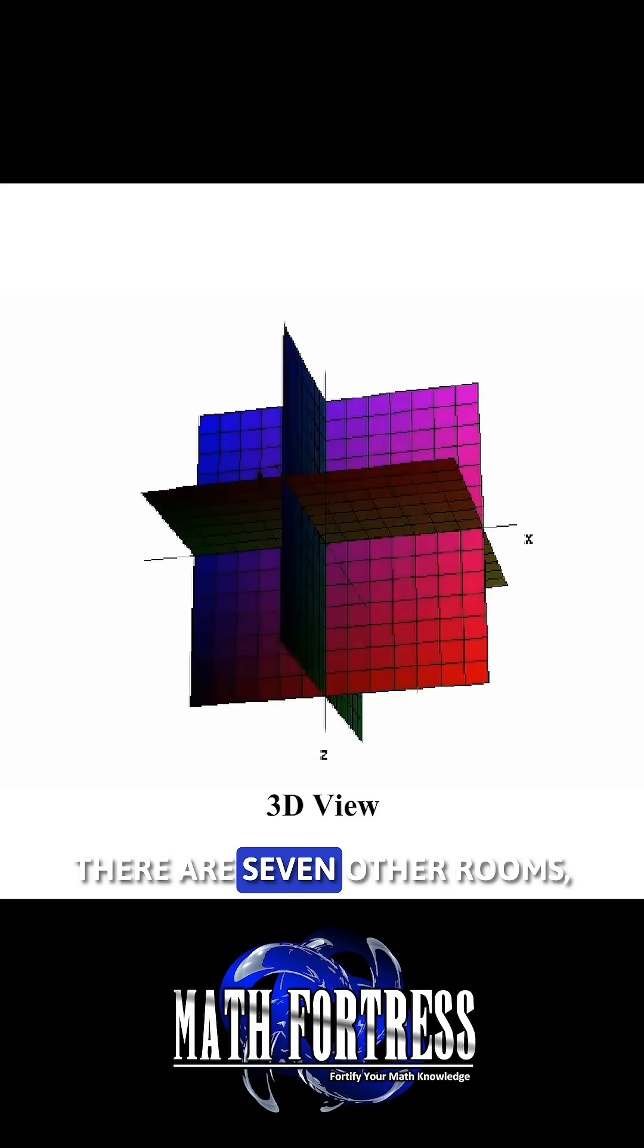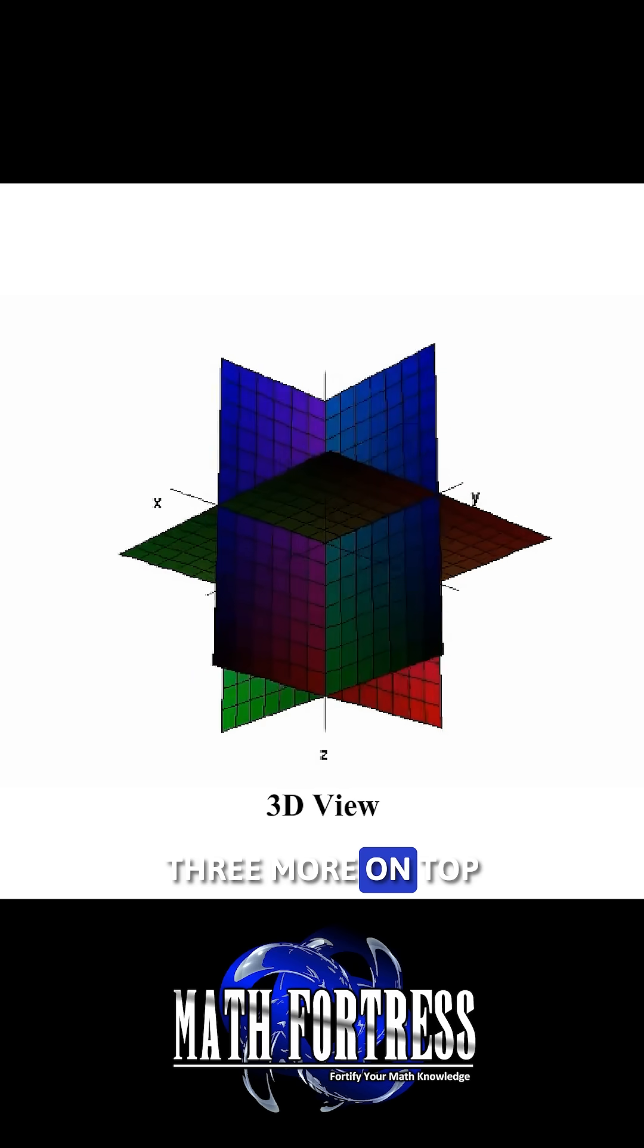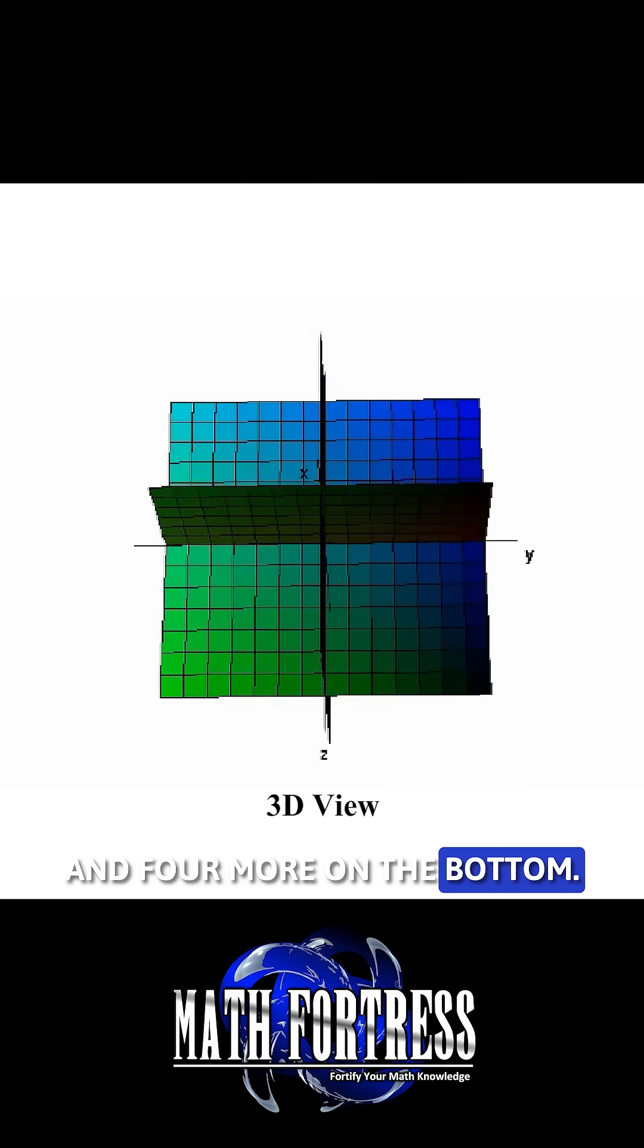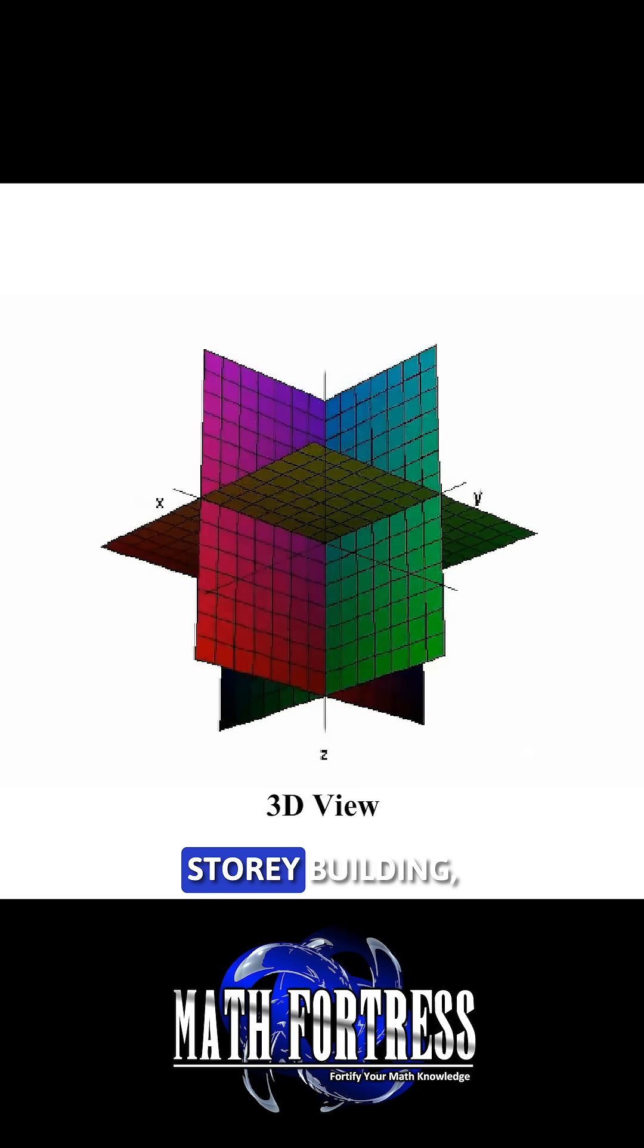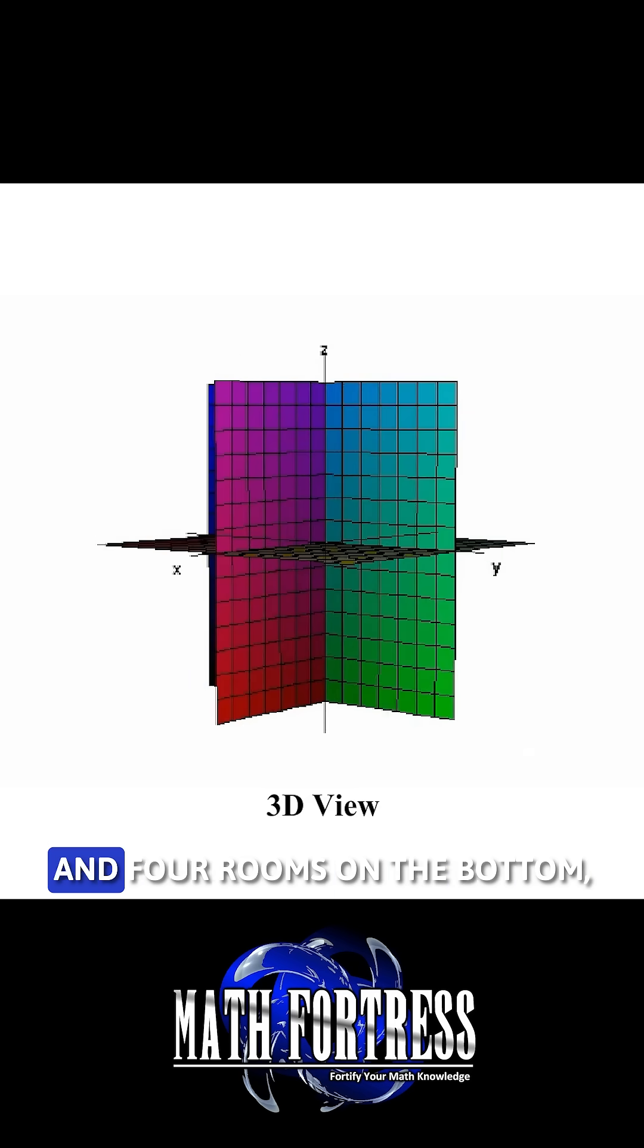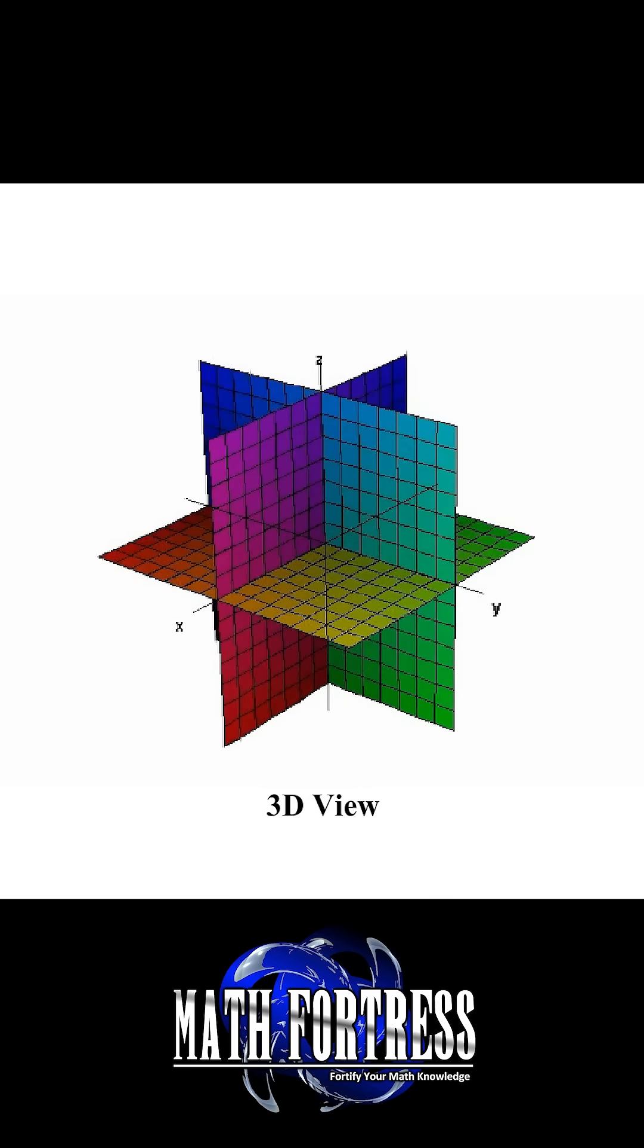In the same manner, there are seven other rooms: three more on top and four more on the bottom. If you imagine this three dimensional coordinate system representing a two-story building, there would be four rooms on top and four rooms on the bottom, each room sharing a common corner called the origin.